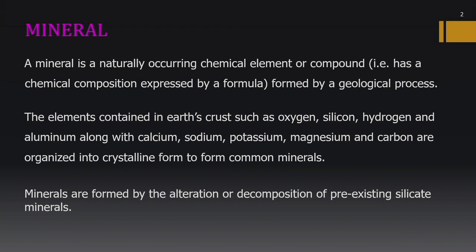In this lecture we will learn about different types of minerals and how they are characterized. Minerals can be defined as naturally occurring chemical elements or compounds with a chemical formula formed by a geological process. The elements contained in the earth's crust — such as oxygen, silicon, hydrogen, and aluminum — along with cations such as calcium, sodium, potassium, magnesium, and carbon — are organized into crystalline form to create common minerals.